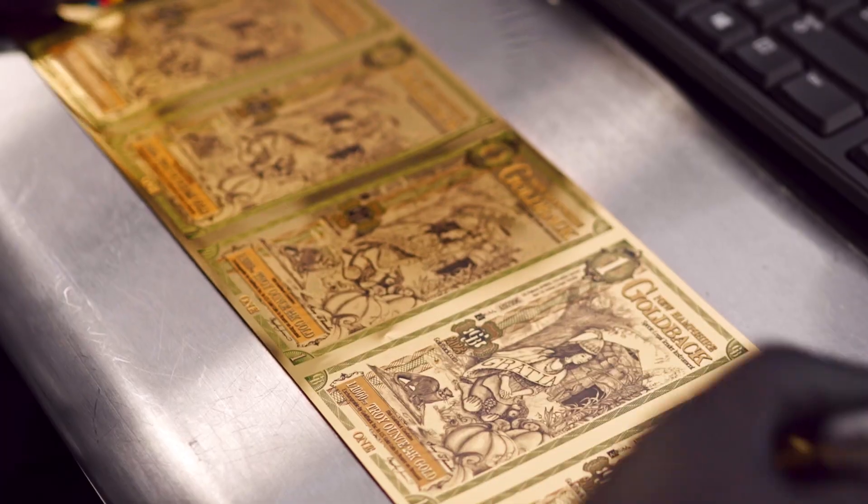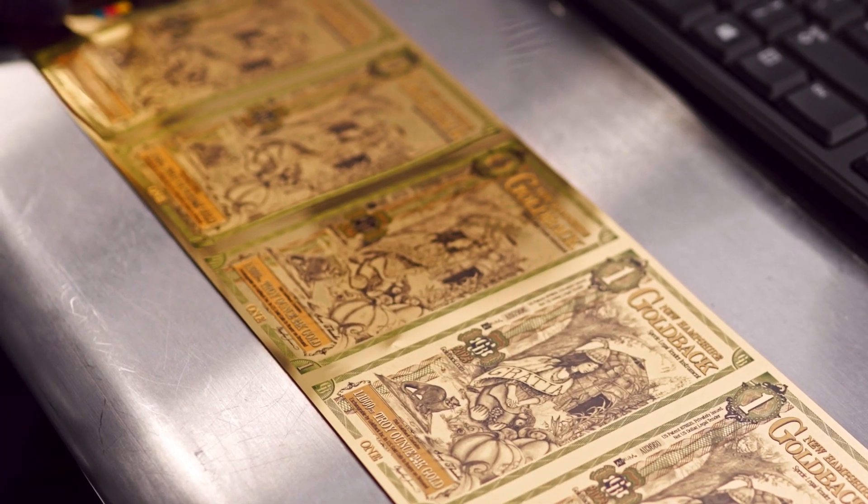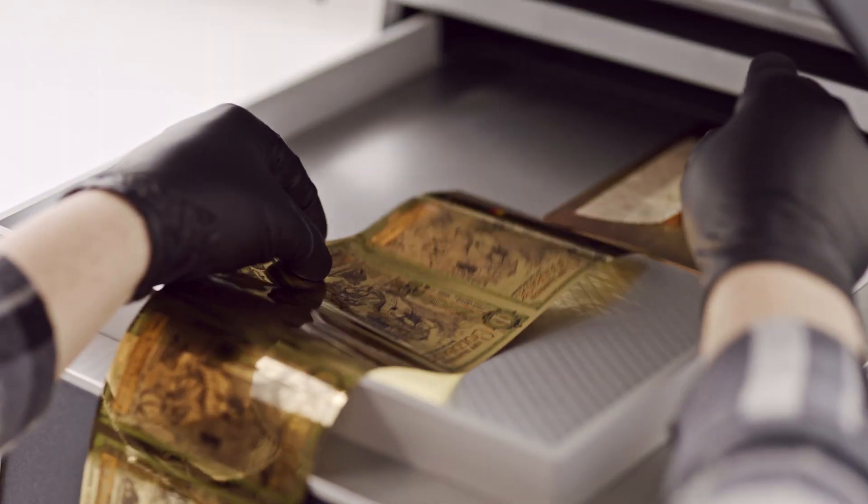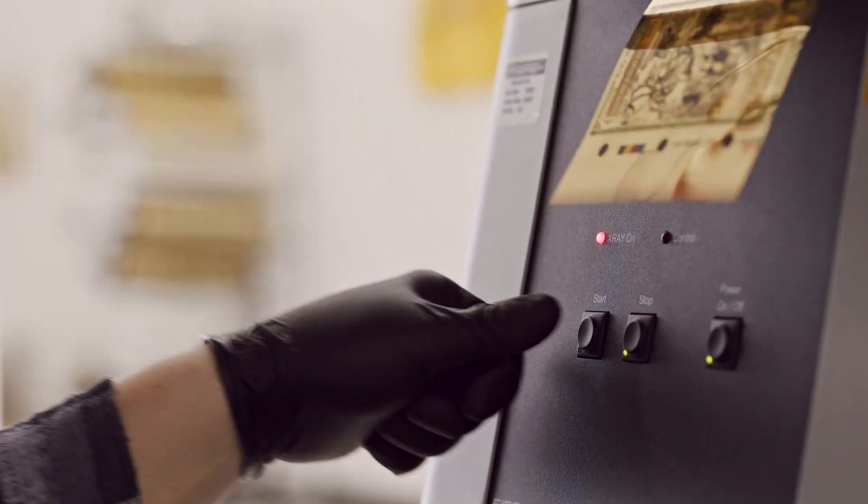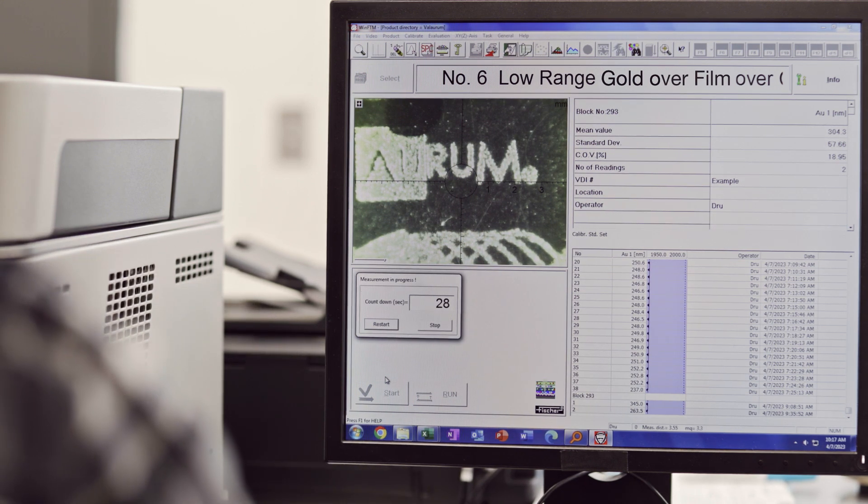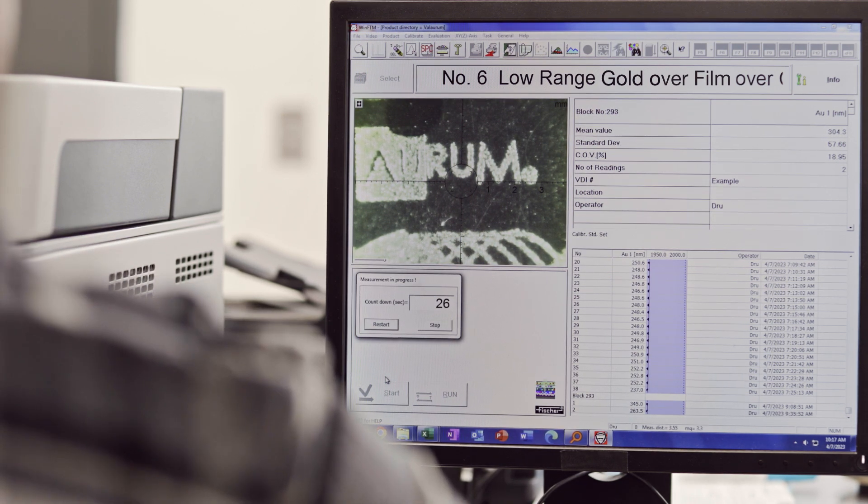Second, each production run of Orem is verified using X-ray fluorescence, or XRF. An XRF machine passes high-energy X-rays through the entire Orem, allowing us to check density and purity in a non-destructive, ISO-certified process.